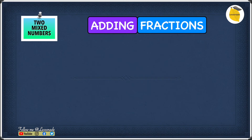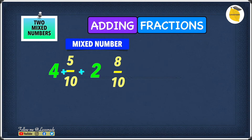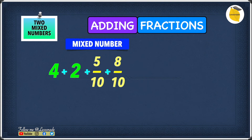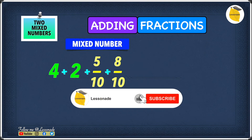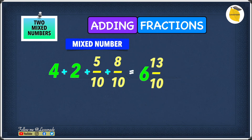Now let's look at adding two mixing numbers again, but this one is a little different. The example is 4 5 over 10 plus 2 8 over 10. We write the mixing numbers as 4 plus 5 over 10 plus 2 plus 8 over 10, then swap the 2 and the 5 over 10 to make it easier: 4 plus 2 plus 5 over 10 plus 8 over 10. So 4 plus 2 gives 6, and 5 over 10 plus 8 over 10 gives 13 over 10, making 6 13 over 10.